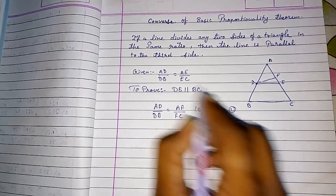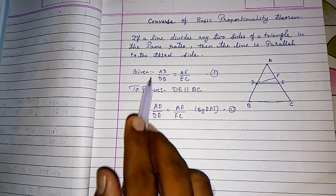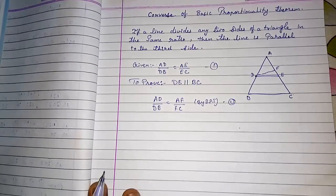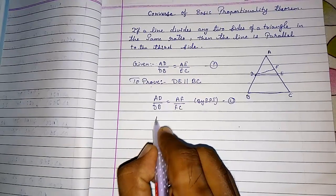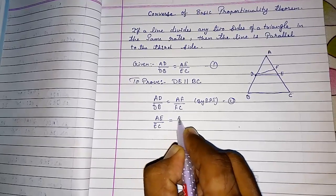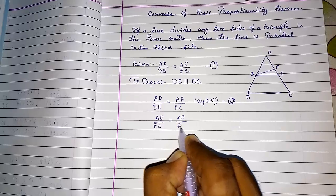Give it result number 2. This was given, take it as result number 1. Now look here. Both these are equal. So from 1 and 2 what we will get? We will get that AE upon EC equals AF upon FC.